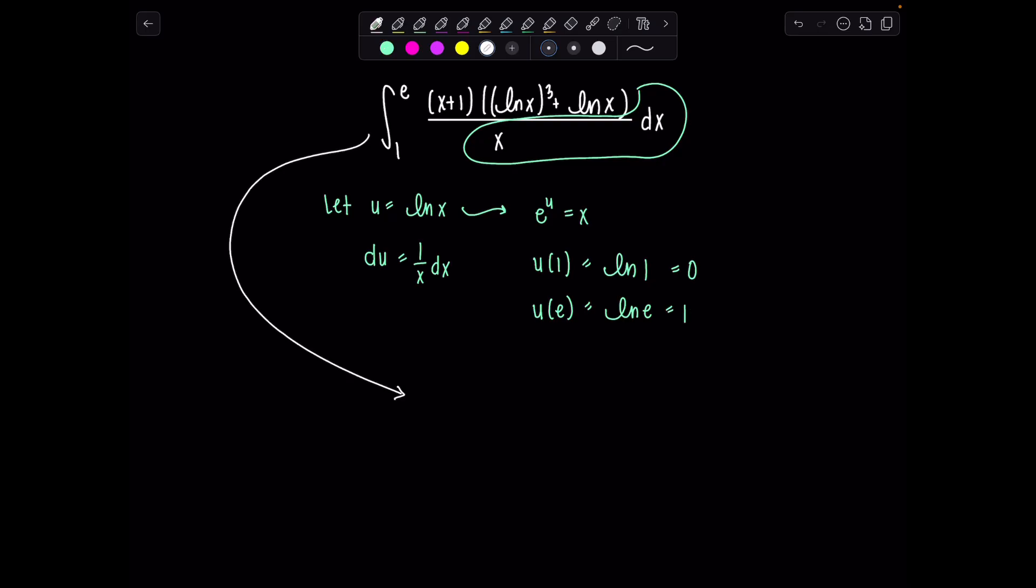Let's rewrite the integral all in terms of u. Now it goes from 0 to 1. x+1 becomes e^u + 1. ln of x cubed is just u³ plus another u. And then all of this dx over x, that's just my du.